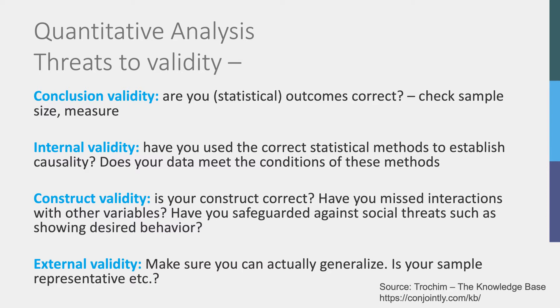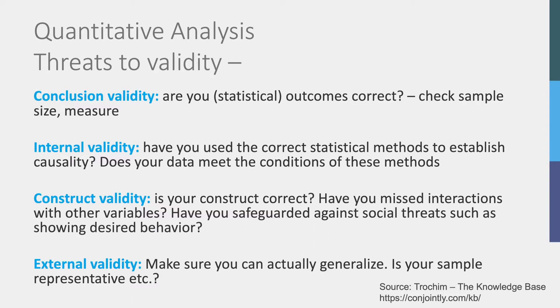For internal validity, you must ensure you use the correct methods to determine if there is a causal relationship. Ensure you do not violate any underlying assumptions your data must meet before you draw conclusions from your statistical calculations. The adages — don't confuse causation with correlation, and garbage in is garbage out — still apply. For construct validity, validity issues can occur if your construct itself was not thought through properly, if you missed possible interactions between other variables, the methods of testing, etc. Social threat is also an issue you must take into account, when your population, or you the experimenter, unwillingly influence the measurement.